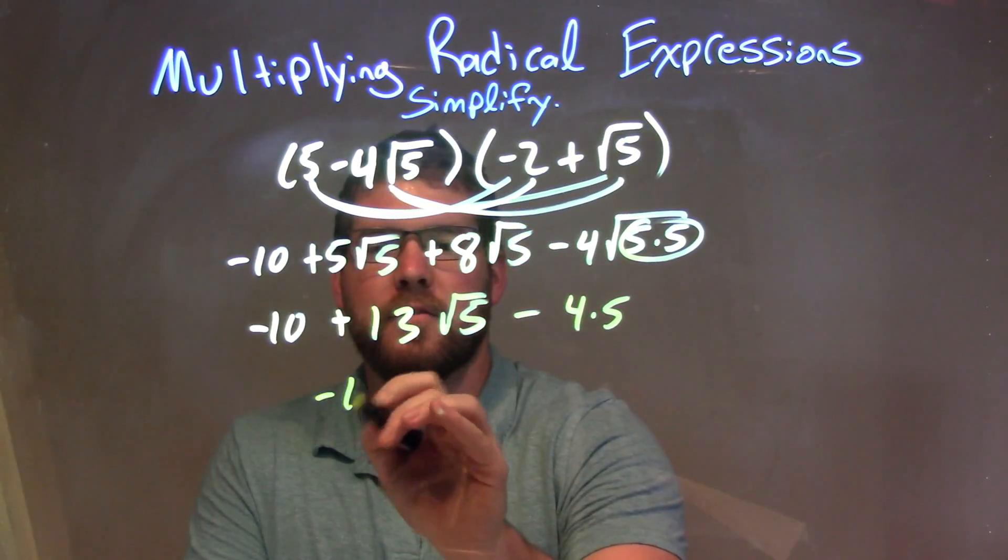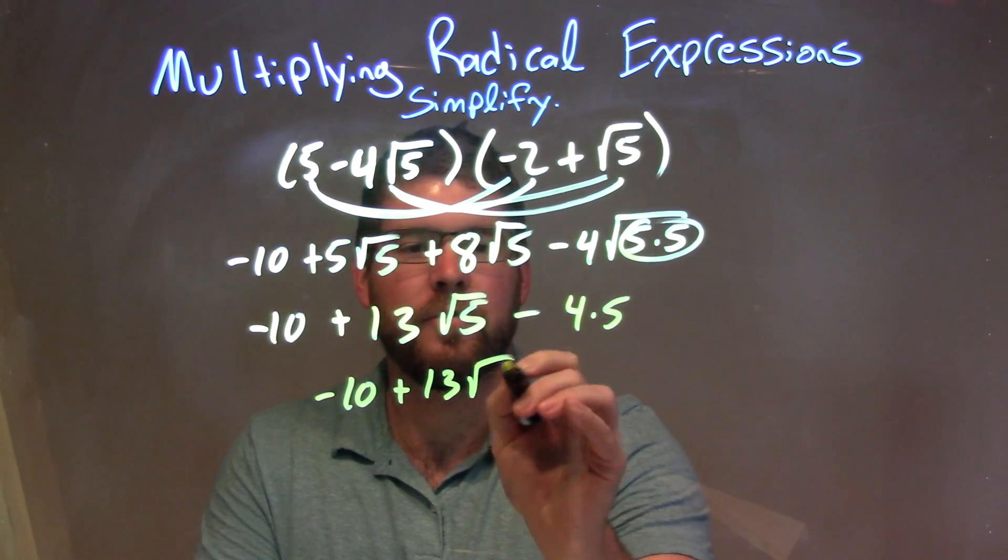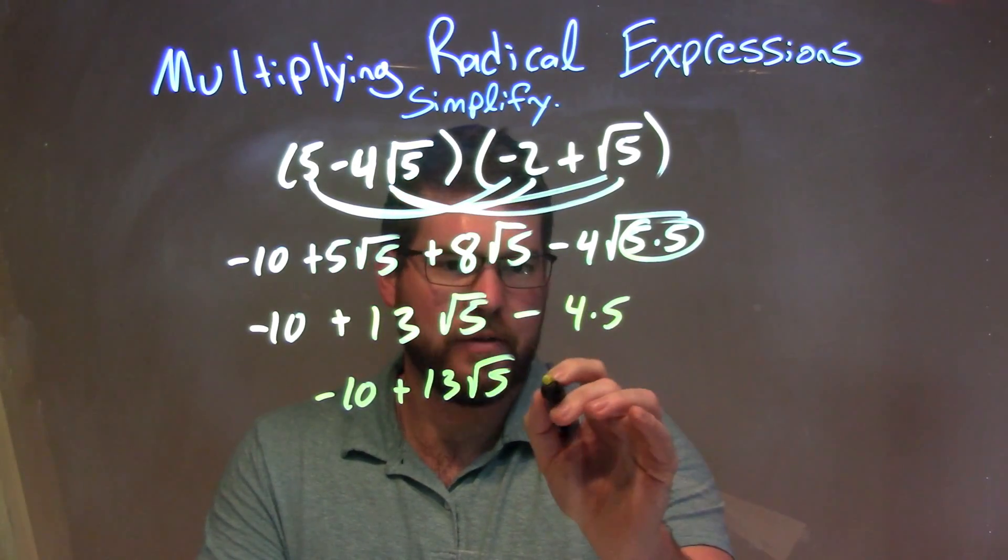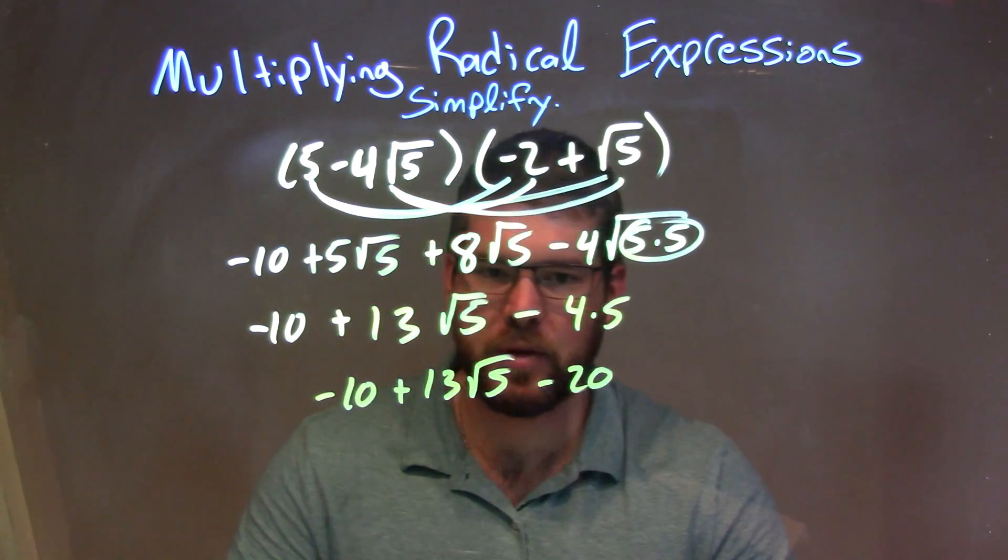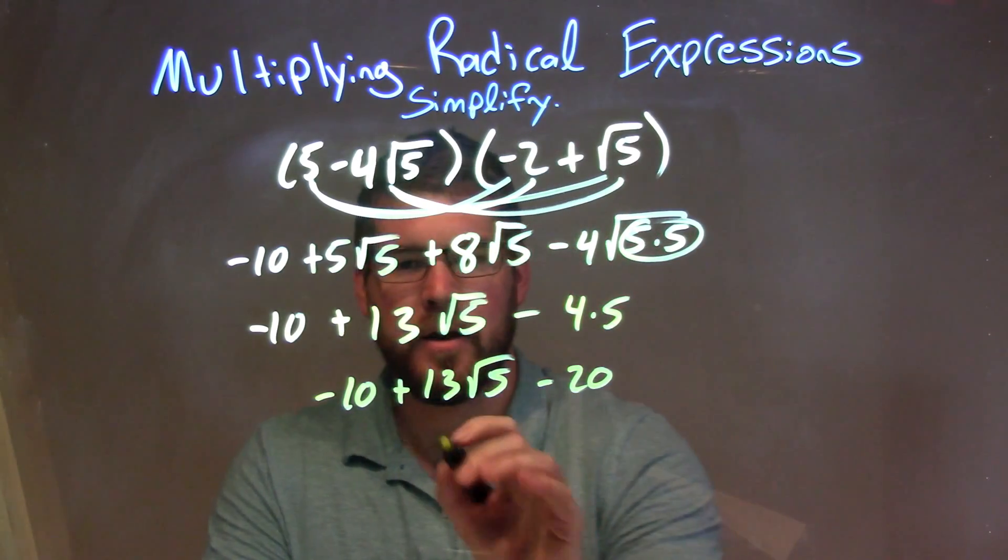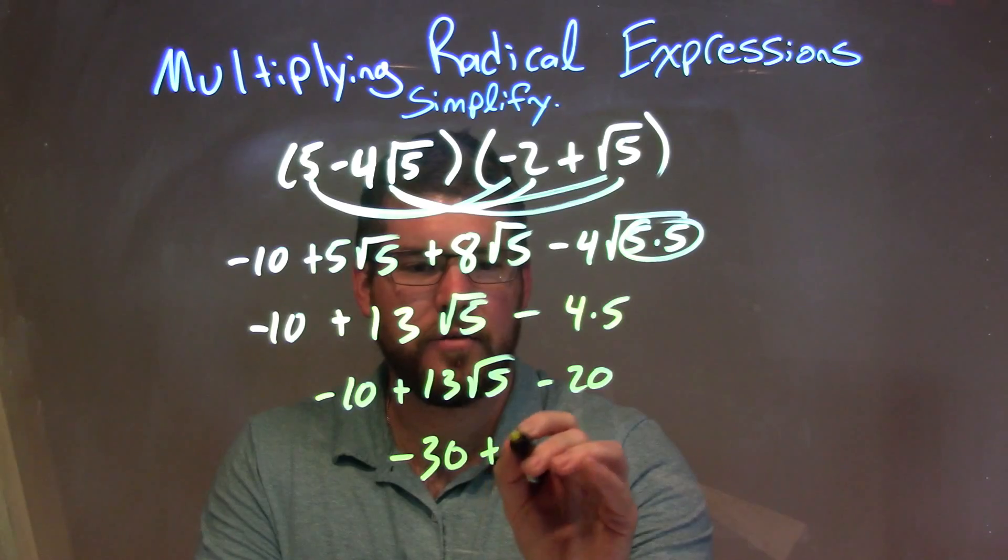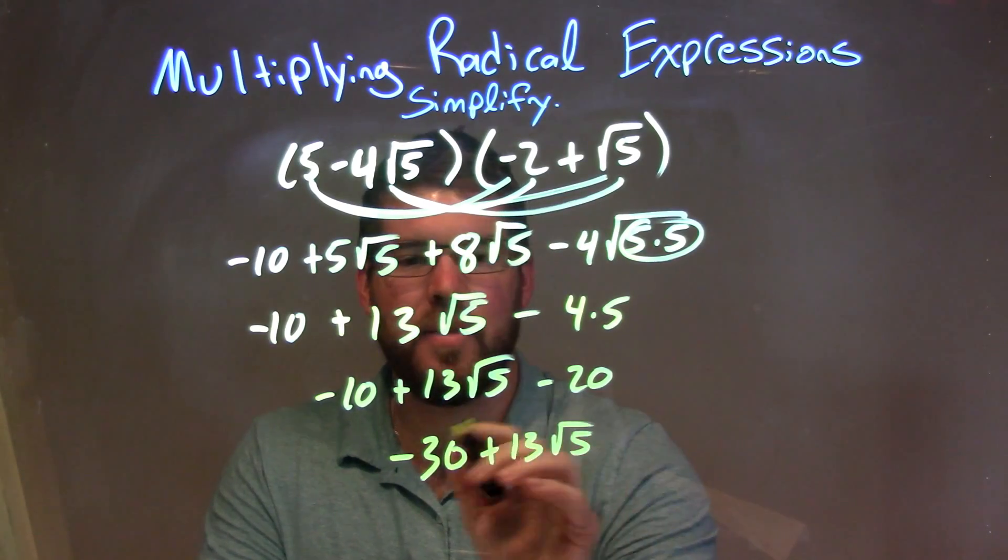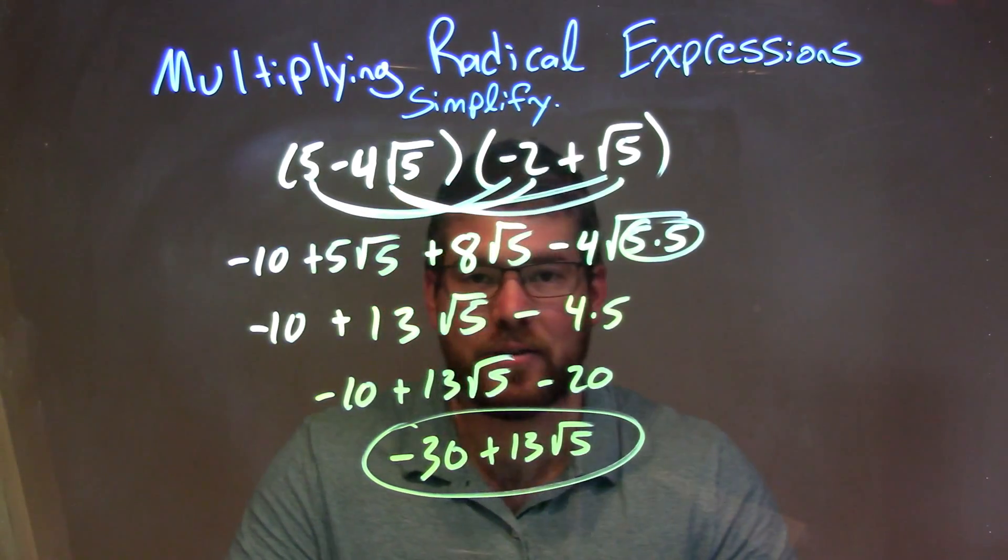So we can simplify this a little more. We have a negative 10 here, plus 13 square root of 5, and then 4 times 5 is 20. So we have minus 20 right there. We can combine that with a minus 10, it would be minus 30. And so we have minus 30 plus 13 square root of 5, and that is our final answer.